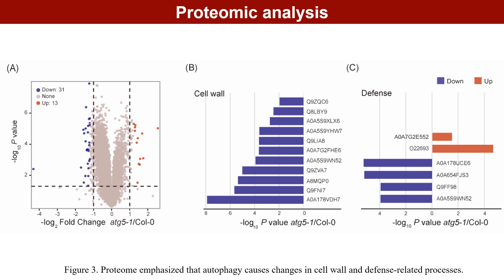Autophagy is known to be a protein degradation pathway, and we hypothesized that the absence of autophagy can alter the content of certain proteins and thereby regulate plant-root microbiota interactions. Therefore, we performed proteomic studies on 5-week-old root samples by mass spectrometry. The results further indicated that the changes of root microbiota in the autophagy mutants were mainly caused by plant cell wall and defense-related processes.